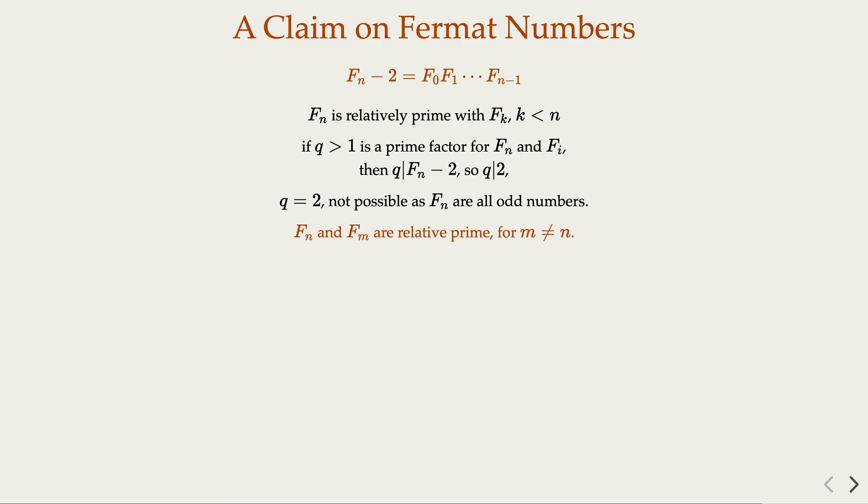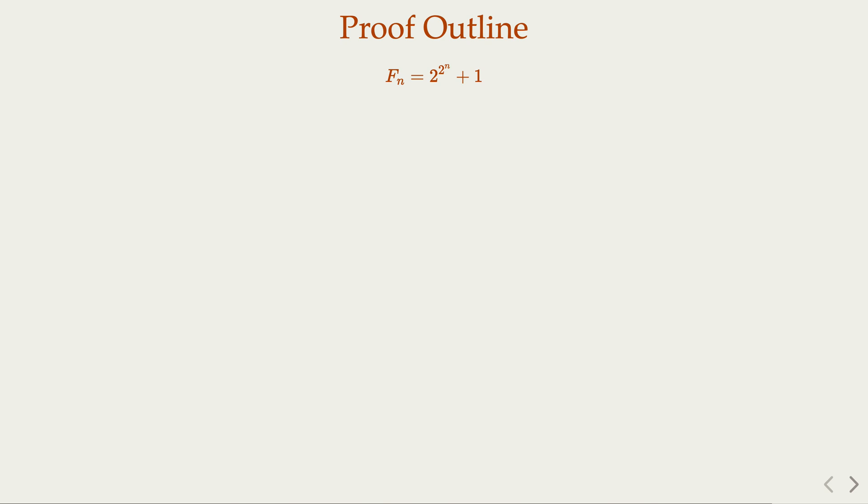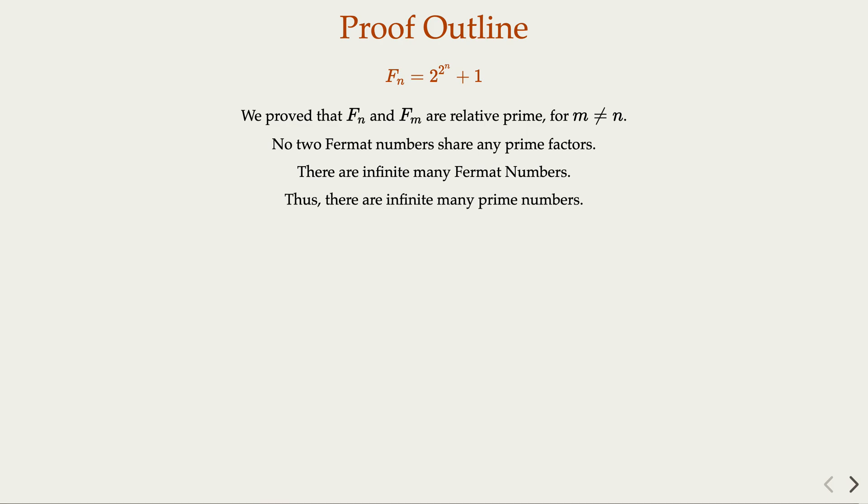So once we have that, let's review the proof outline. For the Fermat numbers, the different numbers are all relatively prime. In other words, no two Fermat numbers share any prime factor. But in the meantime, there are infinitely many Fermat numbers, so we must have infinitely many prime numbers.